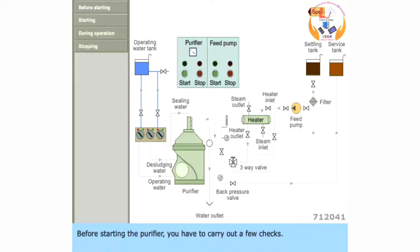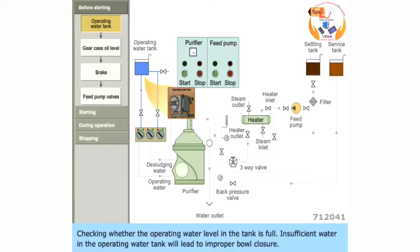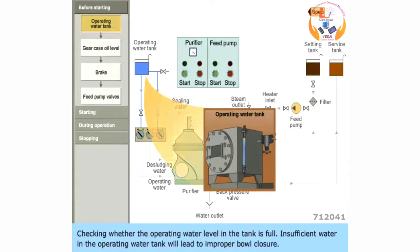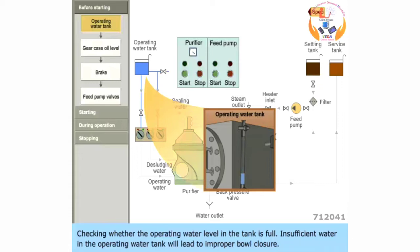Before starting the purifier, you have to carry out a few checks. Check whether the operating water level in the tank is full. Insufficient water in the operating water tank will lead to improper bowl closure. This results in loss of oil to the sludge space.